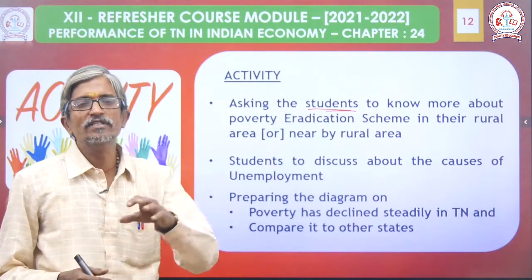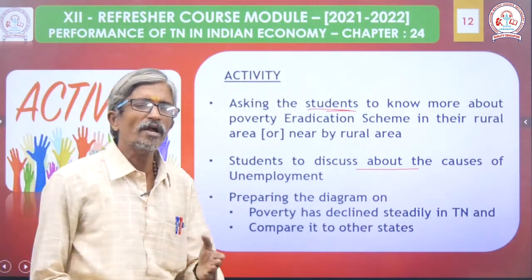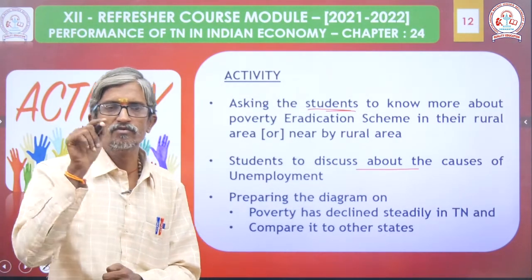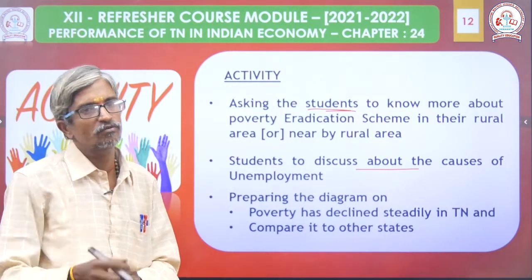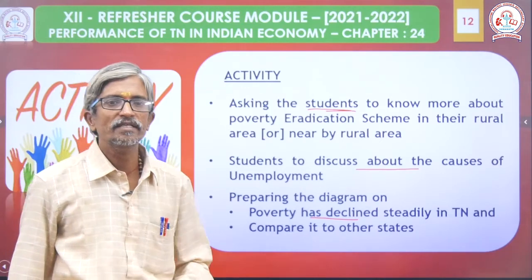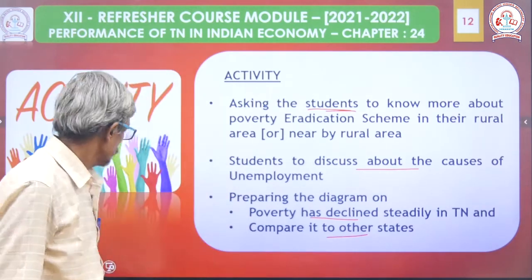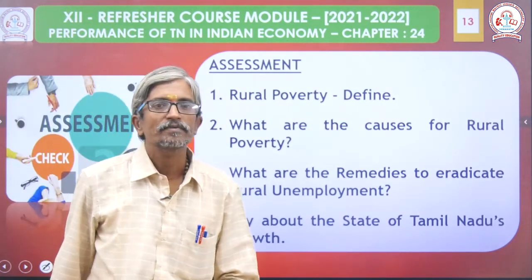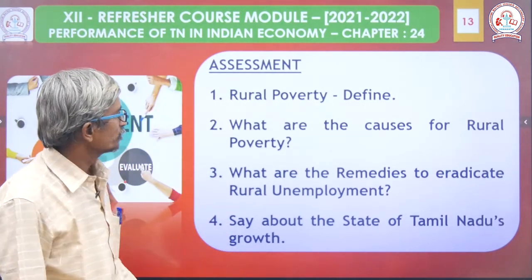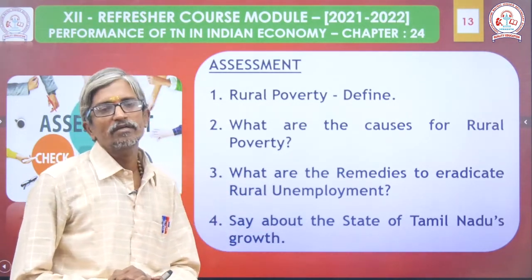We will focus on that area. Students should discuss the causes of unemployment at the national level — I am sure there will be solutions. Poverty has declined steadily in Tamilnadu in recent years. Compare it to other states. Assessment topic: Rural poverty is present — what are the causes of rural poverty, and what are the remedies? These are assessment questions.